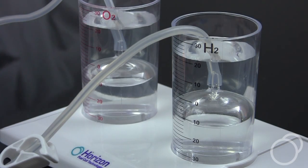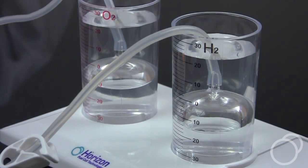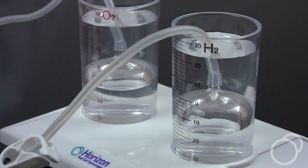Milliliter markings on the sides of the cylinders let students measure how much gas is being produced by observing the displacement of the water.